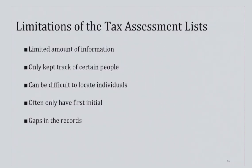That brings us to some of the limitations of these assessment lists. They only tracked a limited amount of information, providing a snapshot of someone's life. Did some individuals leave the area? Did they change careers? Did their businesses fail, or did they not make enough money to get on the list that year? There is added complication because the assessors only listed people with some margin of success. Unlike the census, which captured people of all socioeconomic statuses, races, ethnicities, and genders, the assessment lists only captured people who had a business requiring a license or made more than $600 a year.